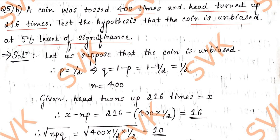As I told you, question number 5B will be of testing of hypothesis for 1% or 5%. Moving on to solution, we need to find out the P and Q value. For that purpose, let us suppose that the coin is unbiased. Our assumption is that the coin is unbiased.